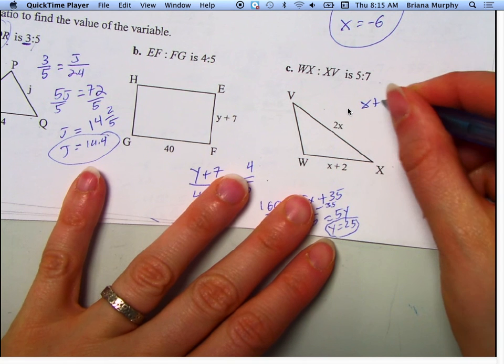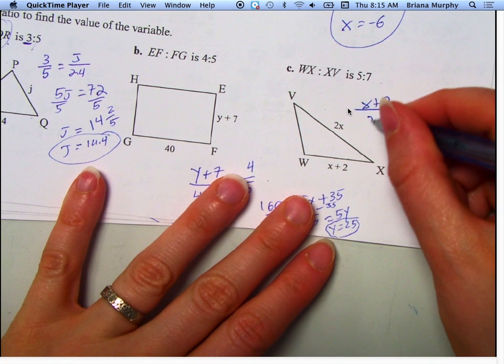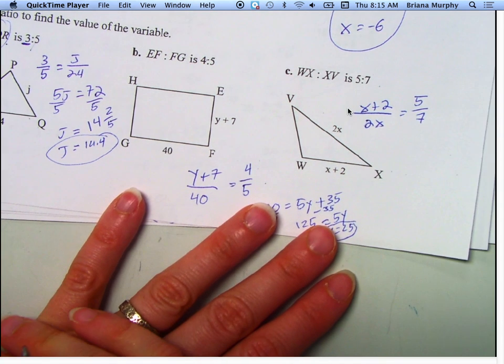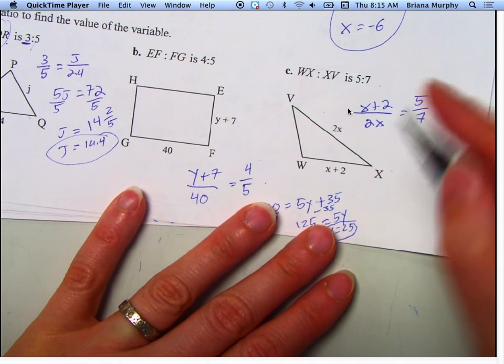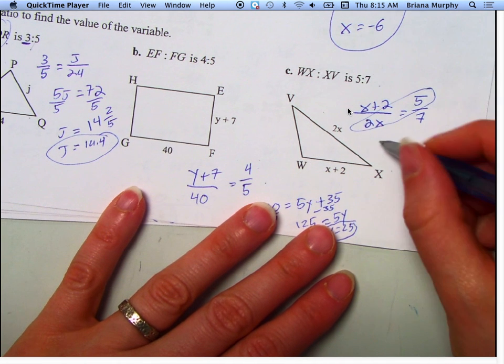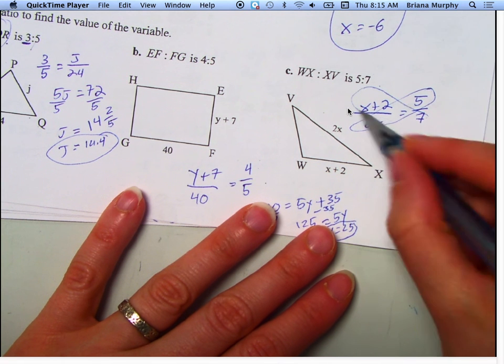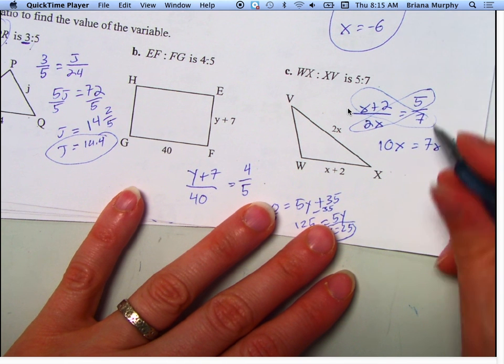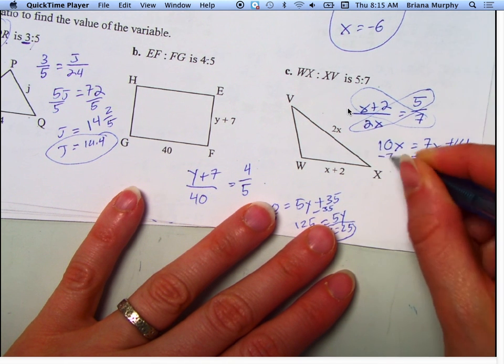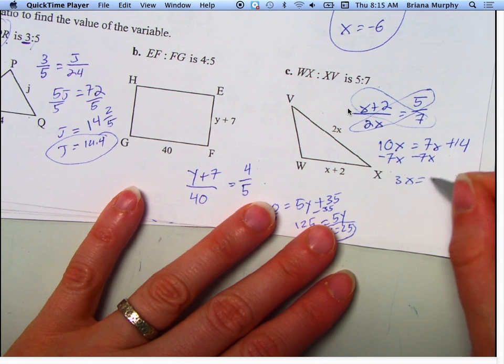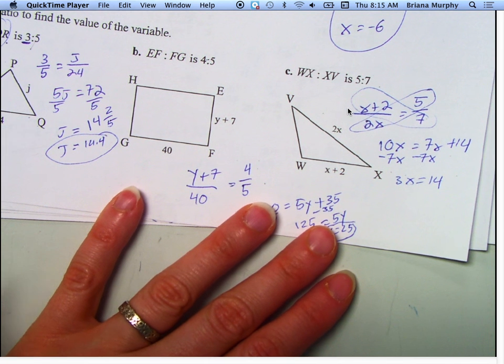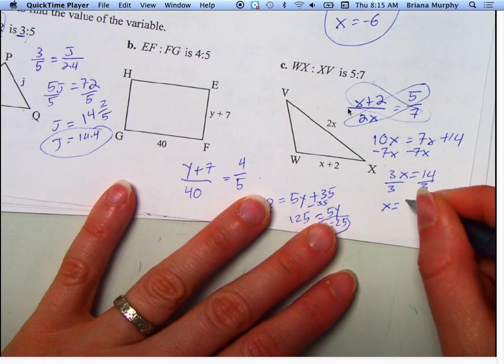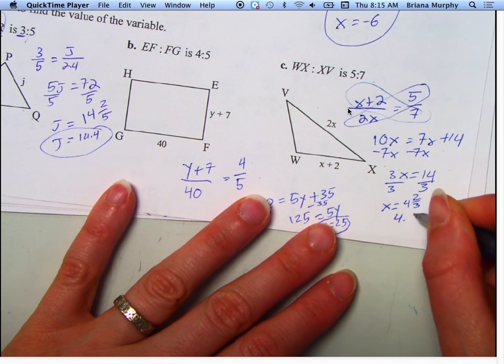WX is X plus 2 over XV, which is 2X. 5 goes on top, 7 goes on the bottom. Now I'm going to cross multiply. 2X times 5 is 10X. 7 times X is 7X. 7 times 2 is 14. We're going to subtract 7X from both sides. We get 3X equals 14. We divide both sides by 3, and we get X equals 4 and 2 thirds, or that's 4.6 repeating, either way.